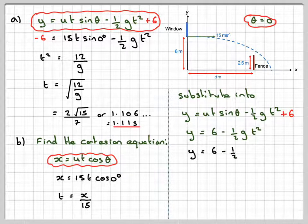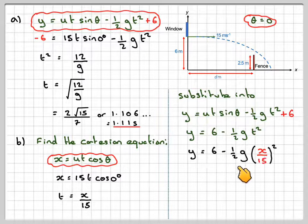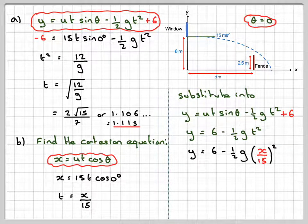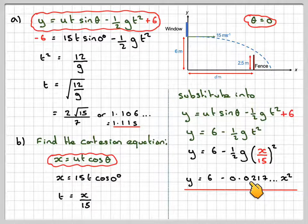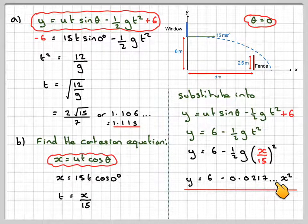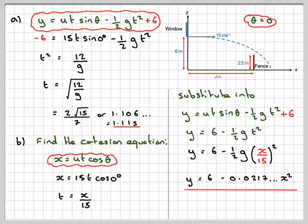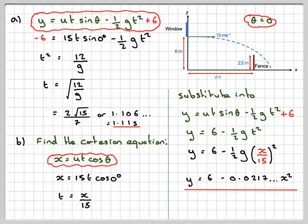Putting my value of t in, we're going to get y is equal to 6 minus 1.5 g x over 15 all squared. And that will give me y is equal to 6 minus 0.0217, 7 actually recurs, x squared. So this is the Cartesian equation.